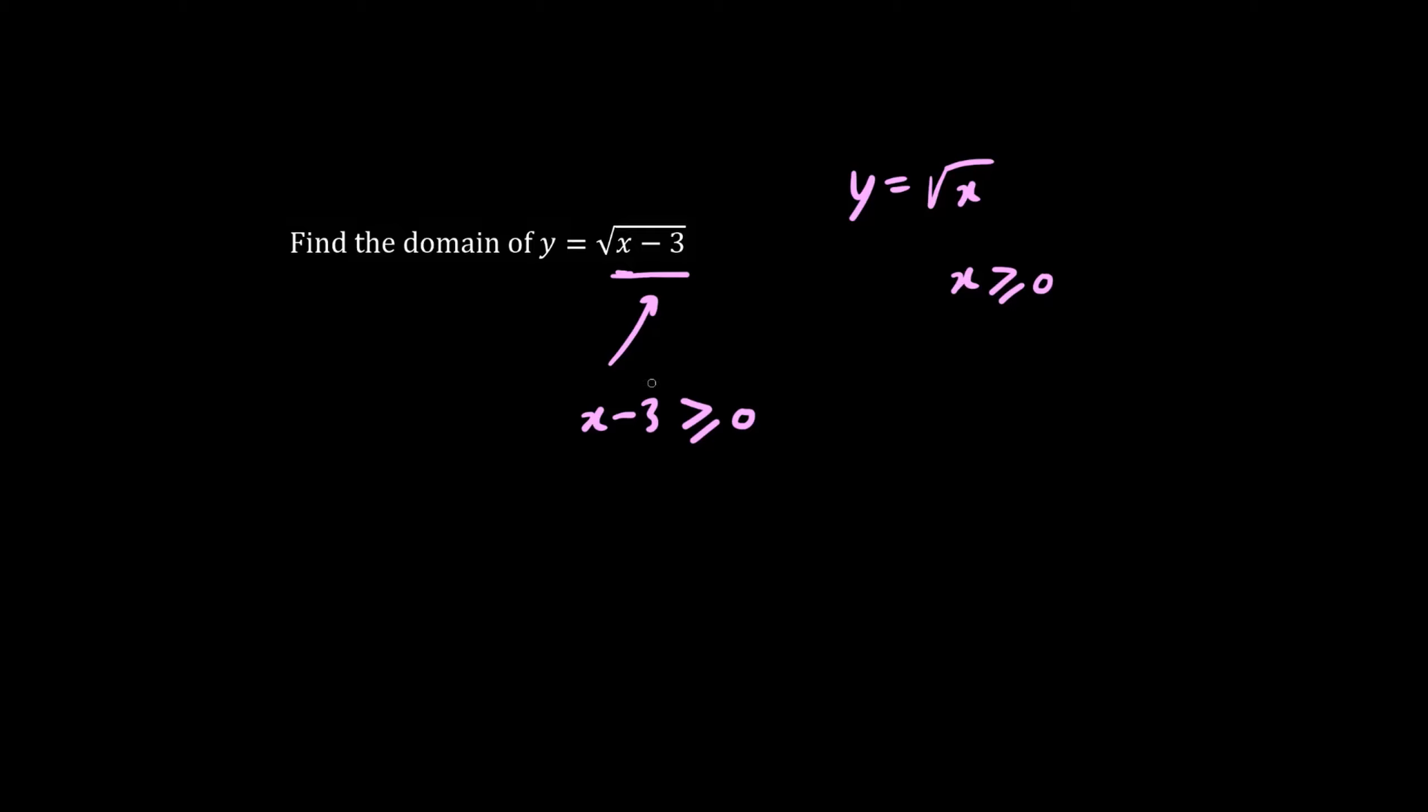So the inside part must be greater than or equals to 0. We use algebra involving inequalities. We add 3 to both sides. We move the negative 3 over. It becomes a positive 3. So the domain is x is greater than or equals to 3.